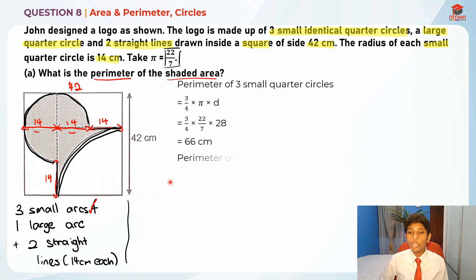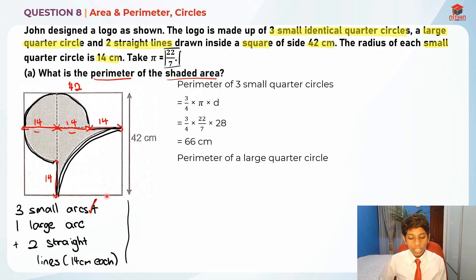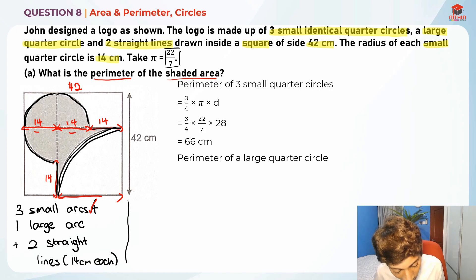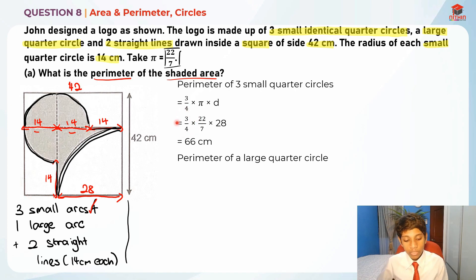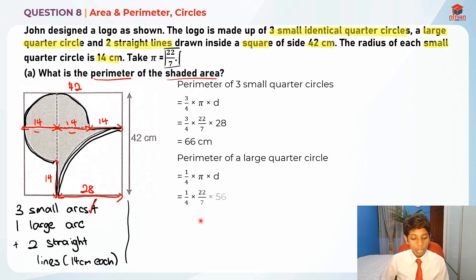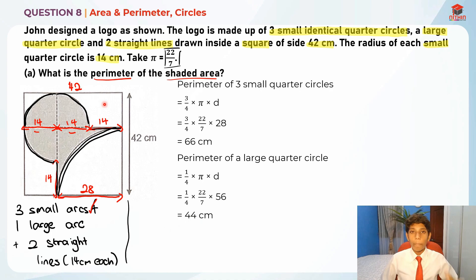Now, one large arc. The perimeter of a large quarter circle is 1/4 × π × d. The diameter is 28 × 2 = 56cm, because the radius of the large quarter circle is 28cm. So: 1/4 × 22/7 × 56 = 44cm. The perimeter of the one large arc is 44cm, and the three small arcs total 66cm.